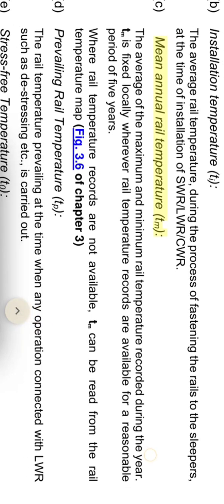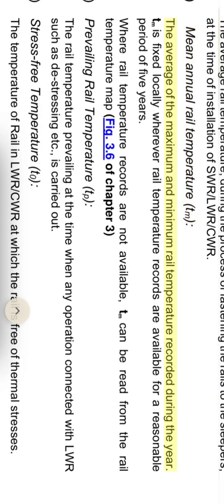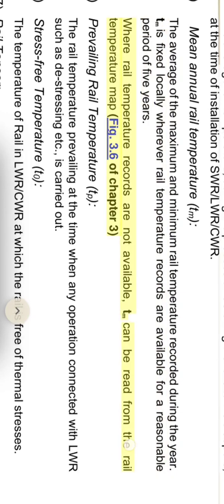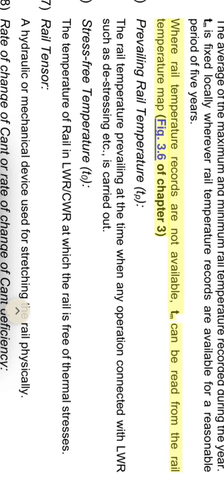Mean annual rail temperature TM: the average of the maximum and minimum rail temperature recorded during the year. TM is fixed locally wherever rail temperature records are available for a reasonable period of 5 years. Where rail temperature records are not available, TM can be read from the rail temperature map, Figure 3.6 of Chapter 3.